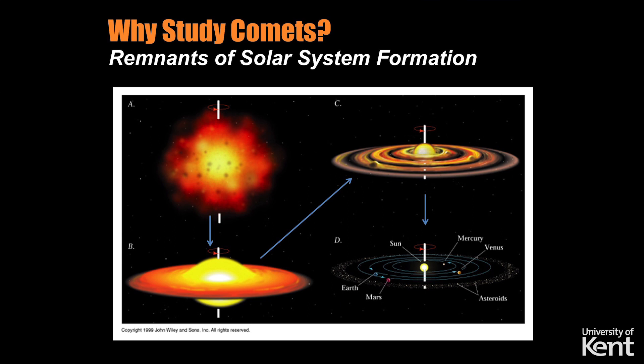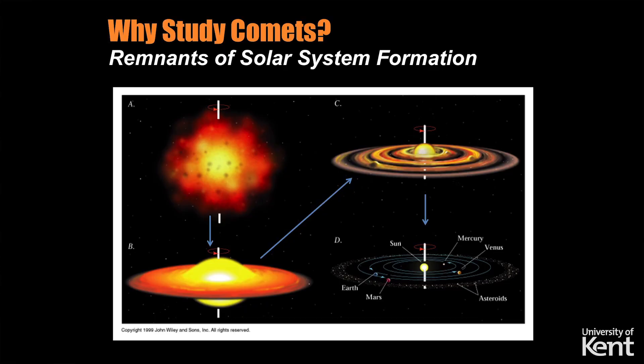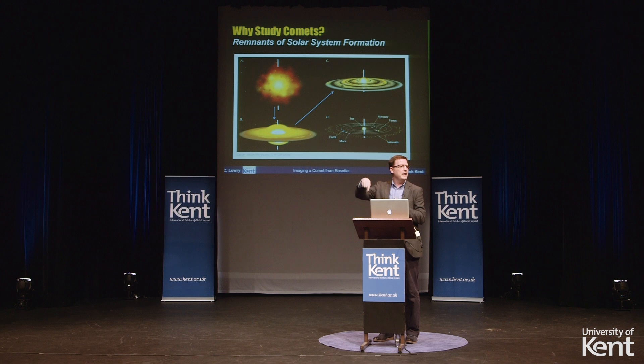So why are we even interested in studying comets? To help answer that question, we have to go back 4.6 billion years ago to when the solar system was forming. The solar system started out as a very large, tenuous cloud of gas and dust that was rotating. That cloud probably experienced a perturbation of some kind, perhaps an exploding star nearby, and that caused the cloud to collapse. If it's initially rotating, the cloud will collapse into a disk-like structure. The material is densest at the central part, and that's where the protostar forms.